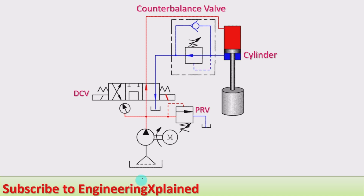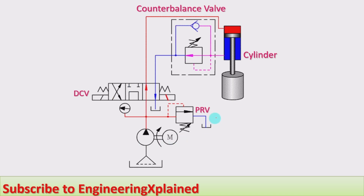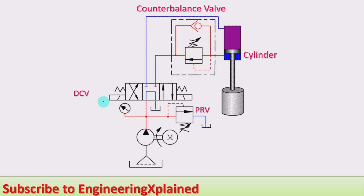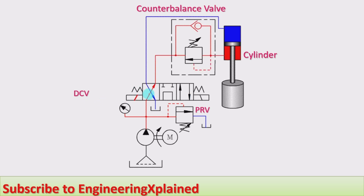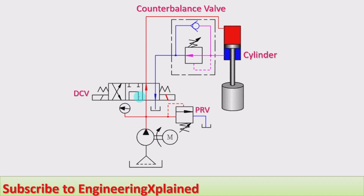The circuit consists of a tank, filter, pump run by a motor, pressure relief valve, and a direction control valve. The direction control valve is a solenoid actuated, spring centered, 4-by-3 direction control valve with an open center at the neutral position.